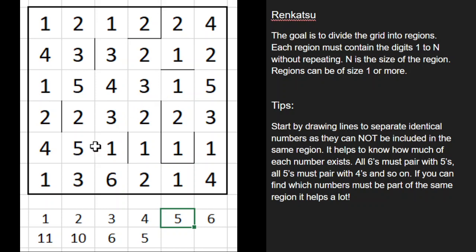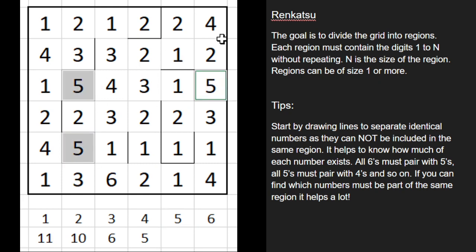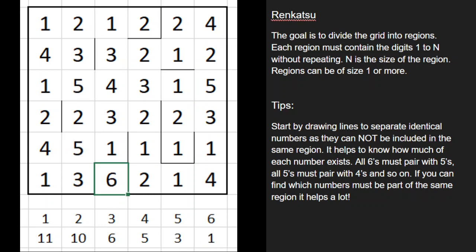If we count the 5's, there are 3 fives. And there's just 1 six. So this is helpful because the one 6 must be connected with a 5, the 3 fives must be connected with 4's, and the 5 fours must be connected with 3's. So every 2 must connect with a 1, but not every 1 must connect with a 2. Usually I try to start backwards from the largest digit.